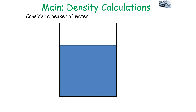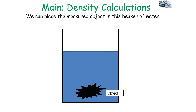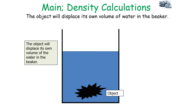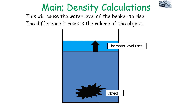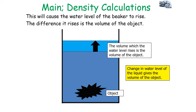Consider a beaker of water. If you place the object in this beaker, it will displace its own volume of water. This will cause the water level to rise, and the volume by which the water level rises is the volume of the object. The change in the water level of the liquid gives the volume of the object.